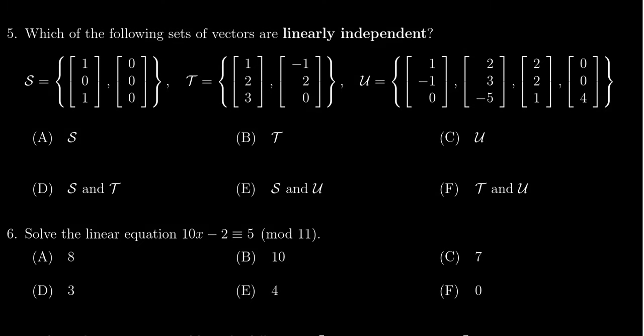In this video we're going to provide the solution for question number five for exam one for math 2270, in which case we're asked which of the following sets of vectors are linearly independent.